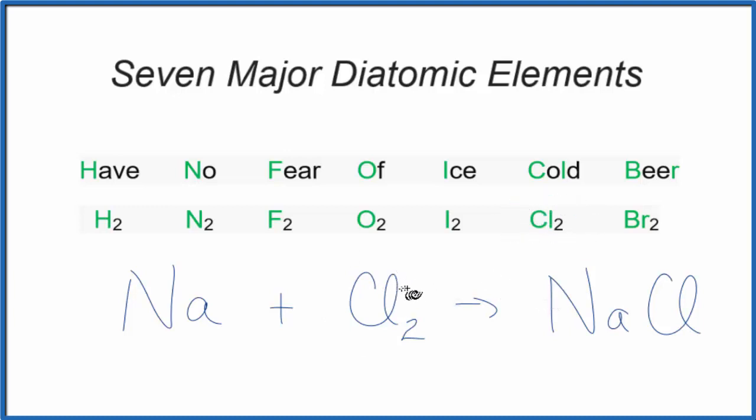Note also, this equation isn't balanced. We have two chlorines here, so we could put a 2 in front of the NaCl. Now we have two Na's. There we go. So two Na's, two Cl's, two Na's, two Cl's. So it's balanced.